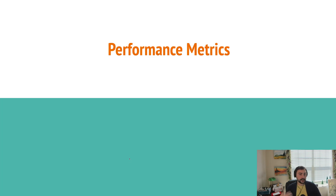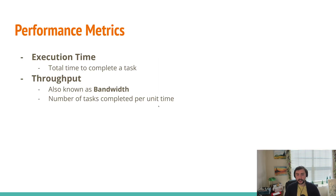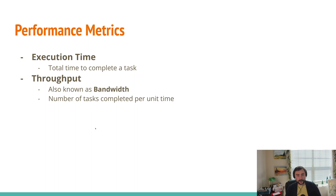So let's talk about some performance metrics — how do we actually quantify performance when talking about architectures or computing systems? Two of the main things we use are execution time and throughput. Execution time is just the total time it takes to complete a task — maybe it takes 10 seconds to run some application. We also use throughput, also known as bandwidth, which is the number of tasks we can complete per unit time — maybe 10 tasks per second or 10 tasks per minute.